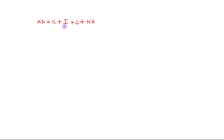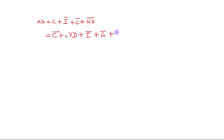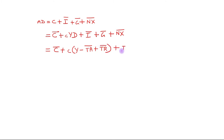AD can be written as C plus I plus G plus NX. Since we have assumed these three components as autonomous or exogenous, I will write them as Ī, Ḡ, N̄X. The next step is to substitute the consumption function: C̄ plus MPC times disposable income, plus Ī, Ḡ, and N̄X. Then disposable income is expanded as Y minus taxes plus transfers, with Ī, Ḡ, and N̄X remaining the same.